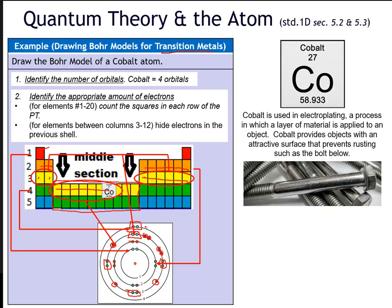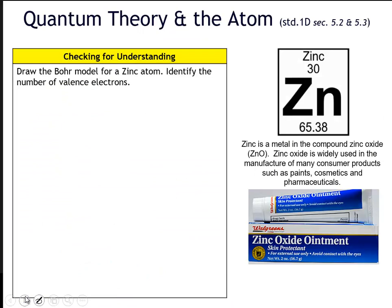Overall, what's most important is that cobalt has two valence electrons because the seven from the transition section are hidden in the third shell. Try the next problem for zinc, and if you have a hard time with it, hit me up in a tutorial.